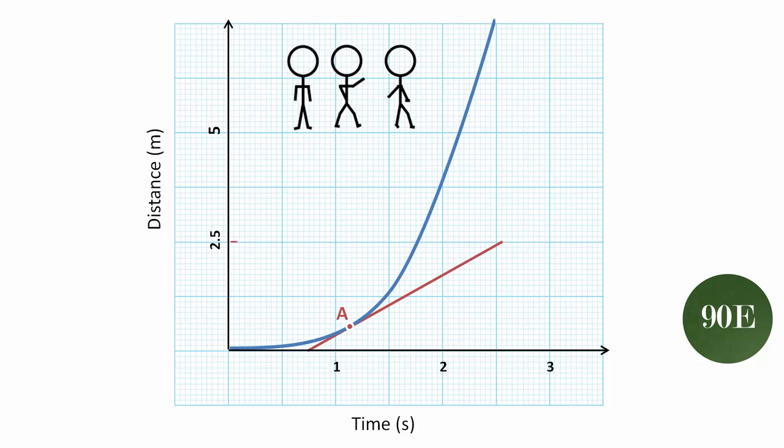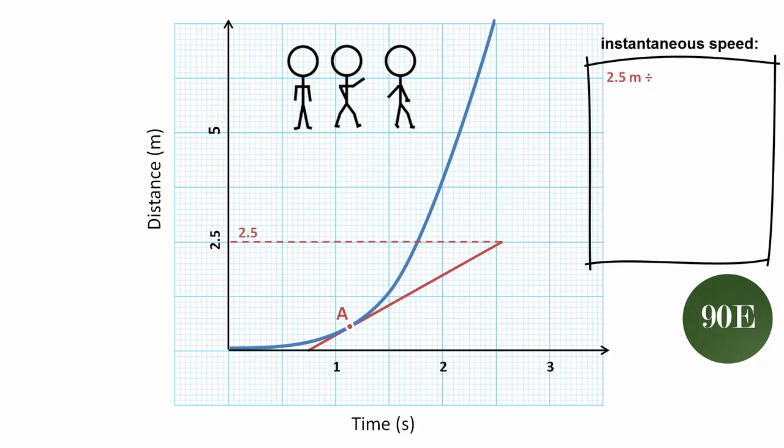First we need to look at the change in the y-axis and that's 2.5 meters, making sure that we always put our units into the equations. And then we need to look at the change in the x-axis, and to do that we need to draw a line down and see where it meets the x-axis, 2.55, and look at where the tangent also intersects with the x-axis, and that's 0.75.